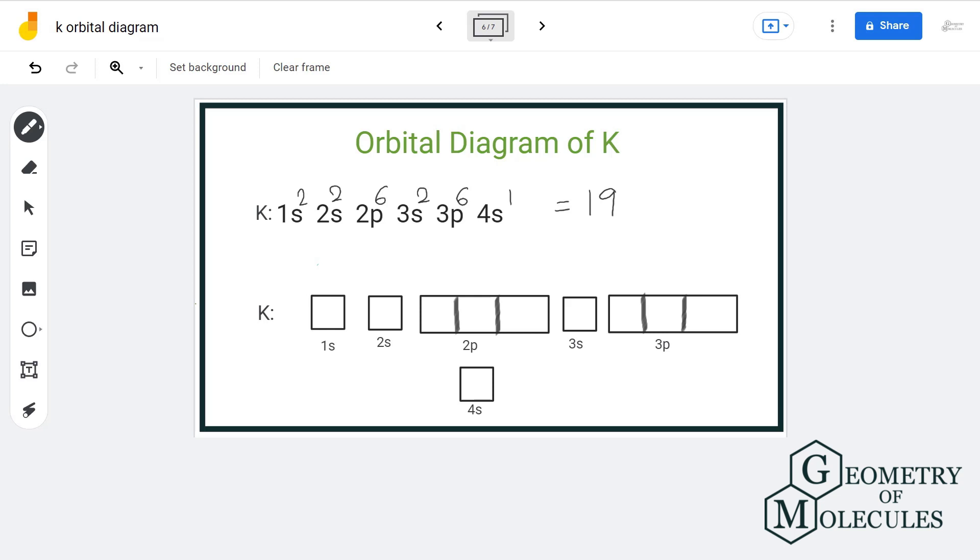So now let us arrange the electrons in orbitals. Now s can hold maximum of two electrons so we will place two electrons with opposite spin. Same we will do with 2s. Then 2p, 3s, 3p. We are left with one more electron that will go into 4s orbital. So this is the orbital diagram for potassium.